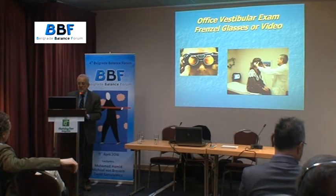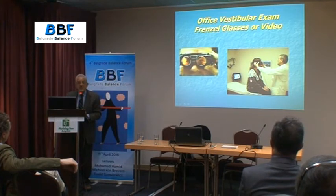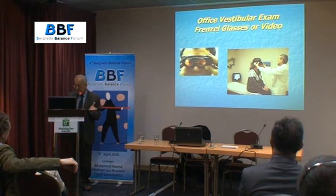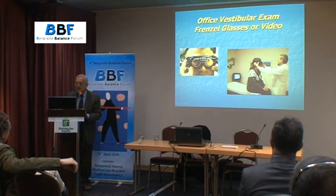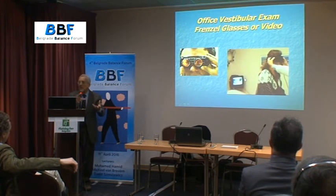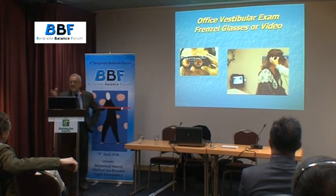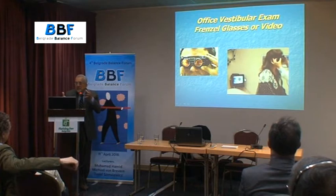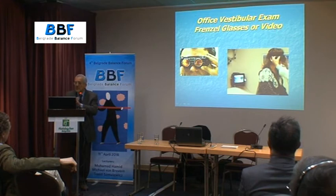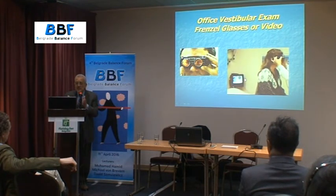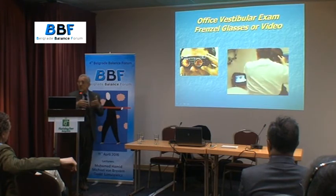How do I do the vestibular exam? You can use Frenzel glasses — I use a video goggle on one eye and a regular TV or computer monitor. You can record it, which is better. Slowly moving the head left and right stimulates the horizontal canals. When you go to the left, you get left-beat nystagmus; to the right, right-beat nystagmus — that tells you that you have good VOR. You can do head tilt for ocular counter-rolling. Then you do head shake and stop to see if there is any post-head-shake nystagmus, in both the horizontal and vertical planes.